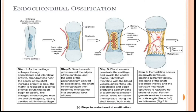The diaphysis of the bone is now formed, but the two edges — the epiphyses — are still cartilaginous and need to be calcified. So this process is repeated again at both edges.